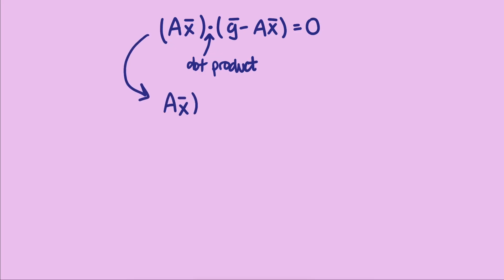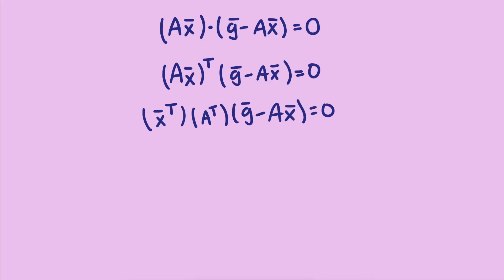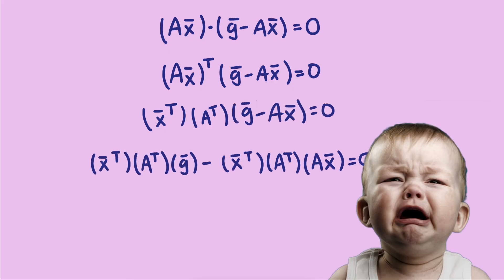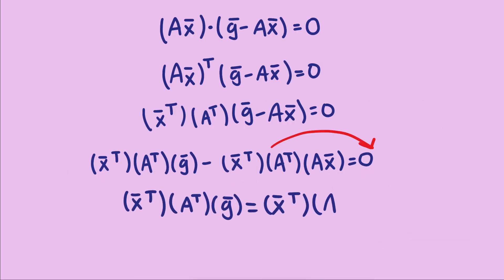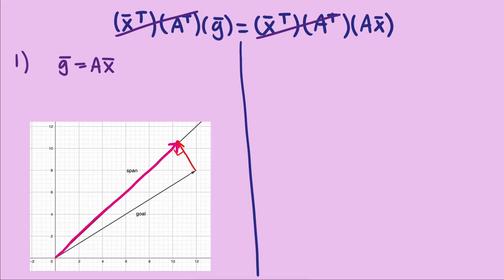We can start by writing the dot product as a matrix product using the transpose operator, by transposing Ax since we're assuming our vectors are column vectors. Now we can distribute the transpose operator by switching the order of A and X bar. We can then distribute over the subtraction to get two expressions. It looks like we're making things worse — it's hard to see how we can isolate X bar. Well, let's pull the right expression over to the right side. When is the left-hand side equal to the right-hand side? There are two cases. Ax has to equal g — meaning g needs to be in the span of the columns — but chances are with real-world data that g will not be in the span, so that won't help us.